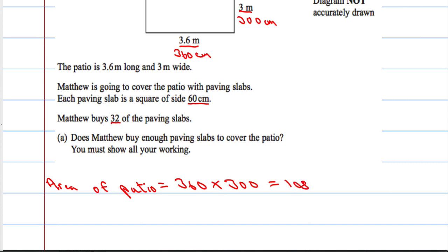I'm going to times my answer by 1, 2, 3, 0 - so times it by 1,000. We get 108,000. The units here are centimeters squared. So the patio is 108,000 centimeters squared.